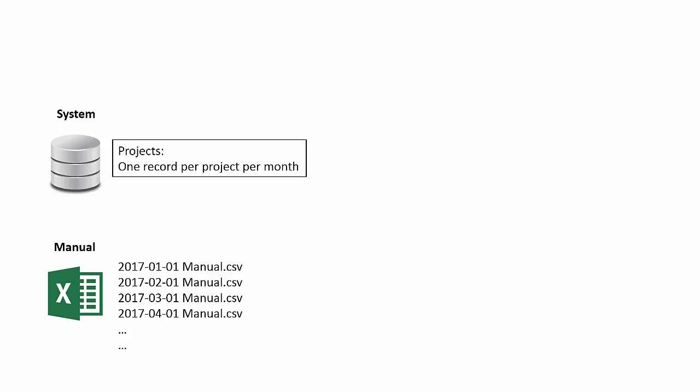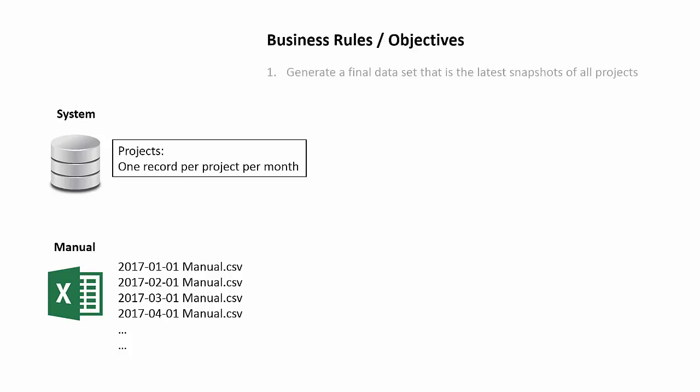There were some complications to account for and some objectives to meet. First, we wanted to generate a final data set with the latest snapshot for all projects. In the system we had one record per project per month; in the manual files a monthly snapshot. Any given project might be in one or more months — a project might be in January, in February, but not in March — while another project might have a record in April. So we needed to get the latest snapshot for each project, even if it was a different month for each project.